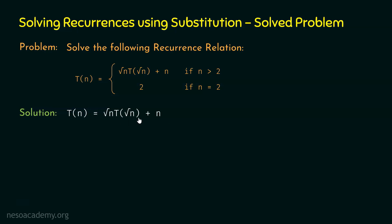Let's substitute T(√n) by √(√n) · T(√(√n)) + √n. We can represent √n as n^(1/2), so we replace √n by n^(1/2). Thus T(n) is the same as n^(1/2) · T(n^(1/2)) + n. In place of T(n^(1/2)), we write n^(1/4), because √(√n) = n^(1/2 × 1/2) = n^(1/4).